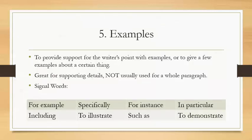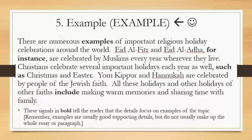Number five: examples. The purpose is to provide support for the writer's point. Usually examples are supporting details — they don't provide the structure for the whole paragraph or essay, but they're a part of it. Signal words for examples are: for example, specifically, for instance, in particular, including, to illustrate, such as, and to demonstrate. Here is an example paragraph — notice it says 'there are numerous examples of important religious holiday celebrations' and then gives a list of examples.